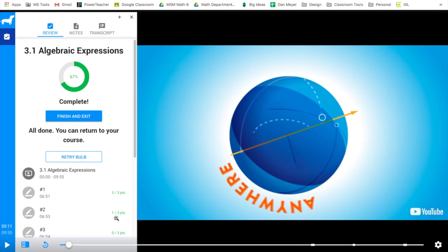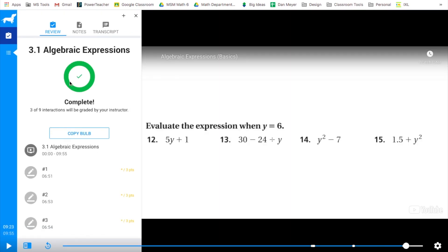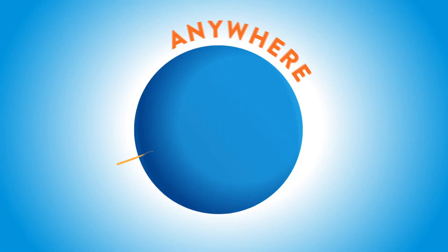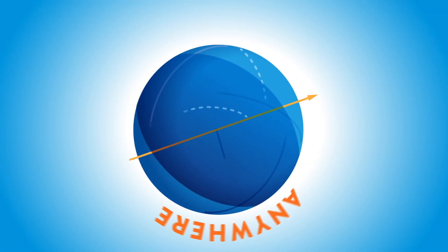You can see on this one, the teacher has already graded them. This student got three out of three on the first question. They only got one out of three on the second and zero out of three on the third question. When you are finished, make sure you click finish and exit. Or if you would like to retry, you can retry it. So as always, thank you so much for watching. And if you like this video, please subscribe.